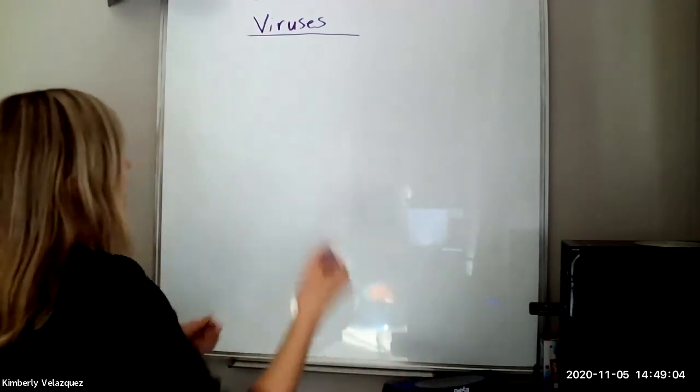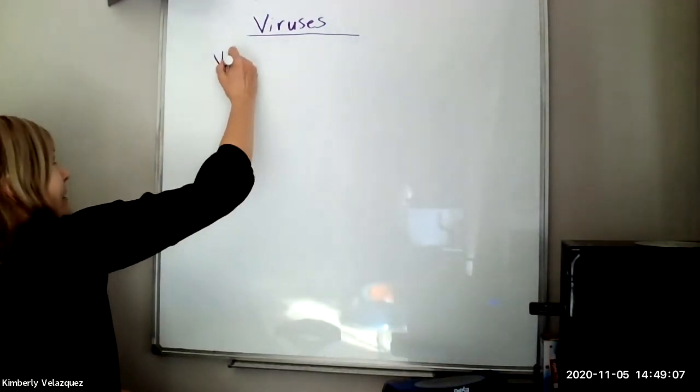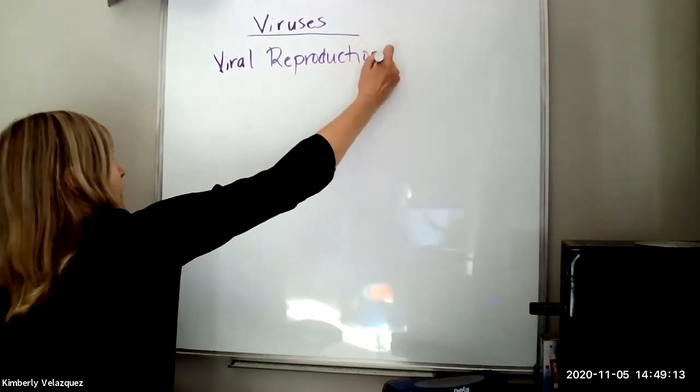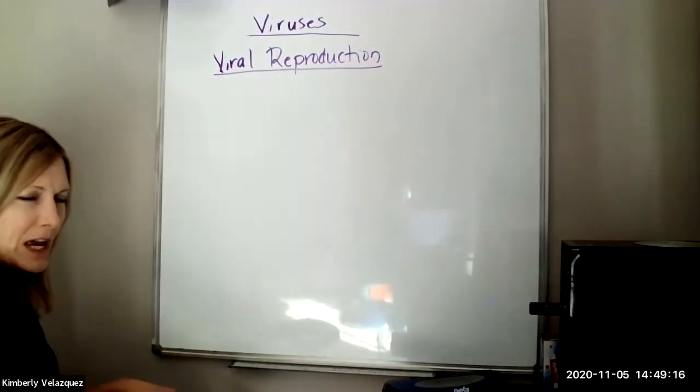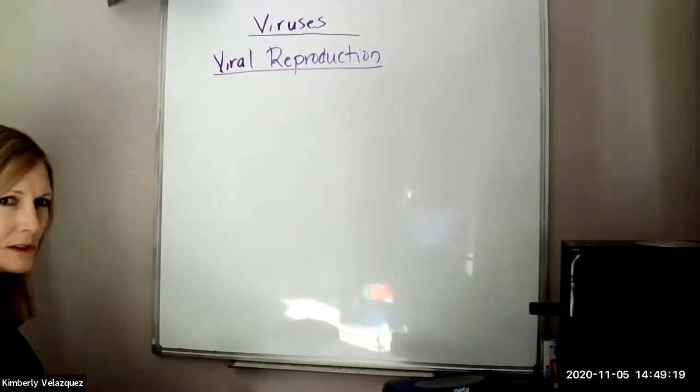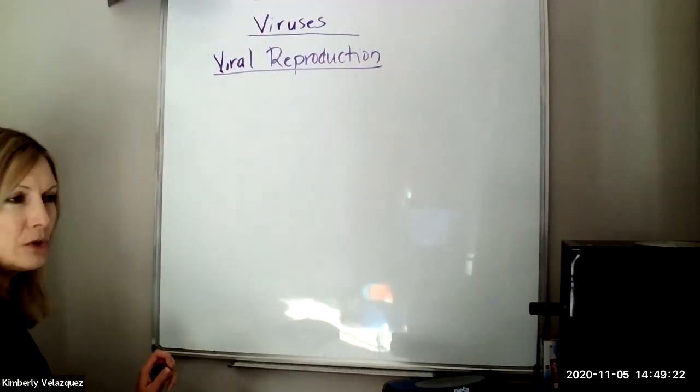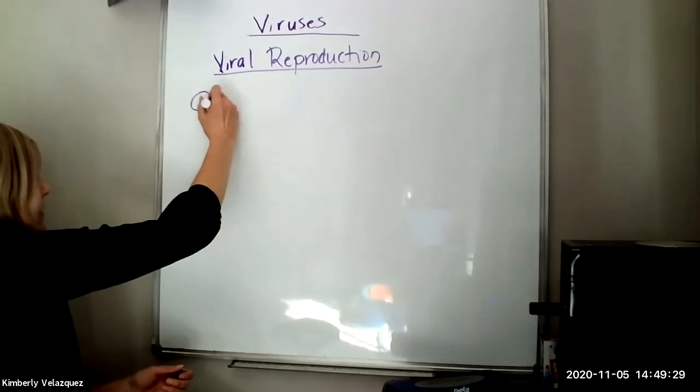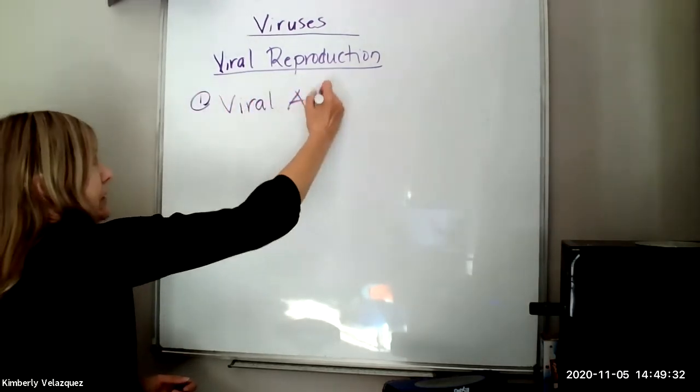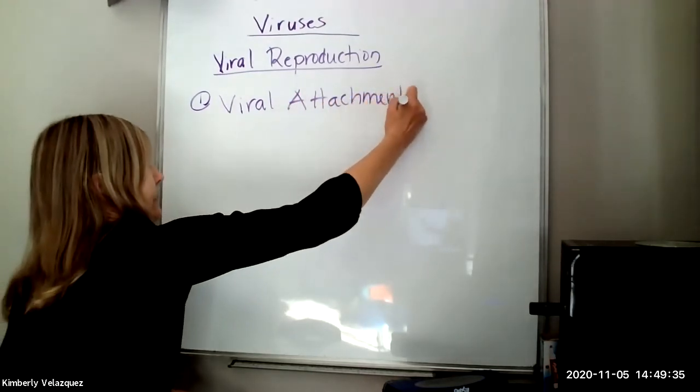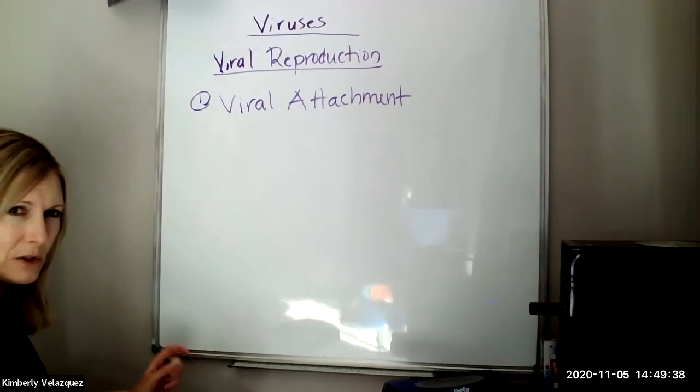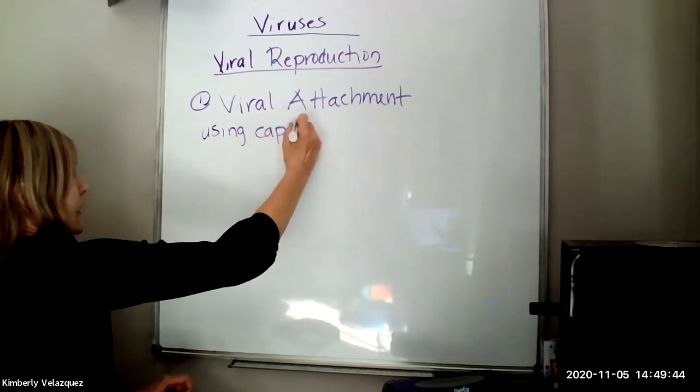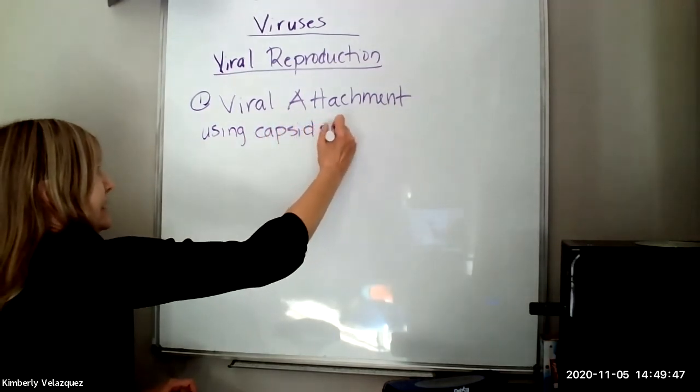Let's talk about the basic reproduction of viruses. So this is going to be viral reproduction. Viruses have co-evolved with their host cells and have adapted to be able to trick the host cell into letting it in. And they do that by first attaching to the host cell. And they do that using those proteins that are on the surface. So they can use capsid proteins.